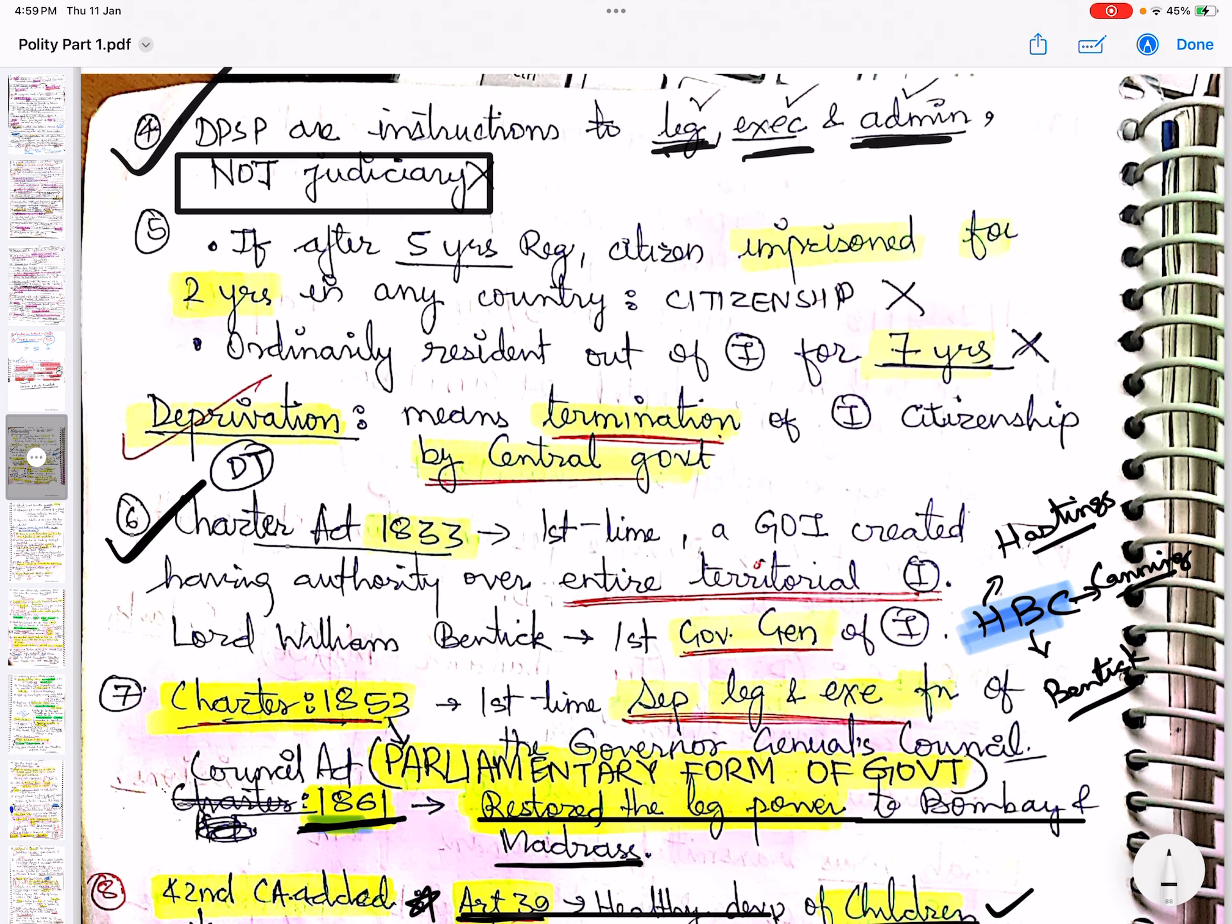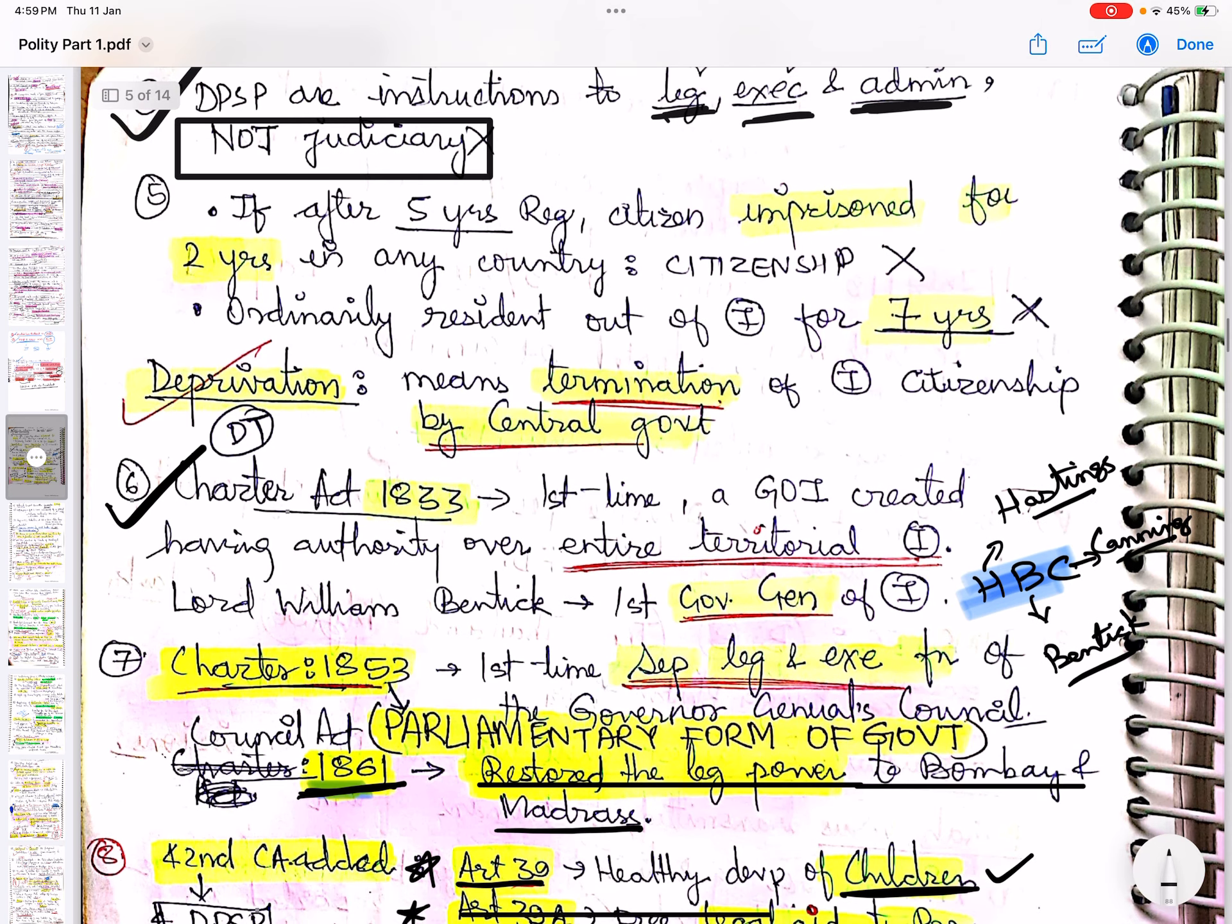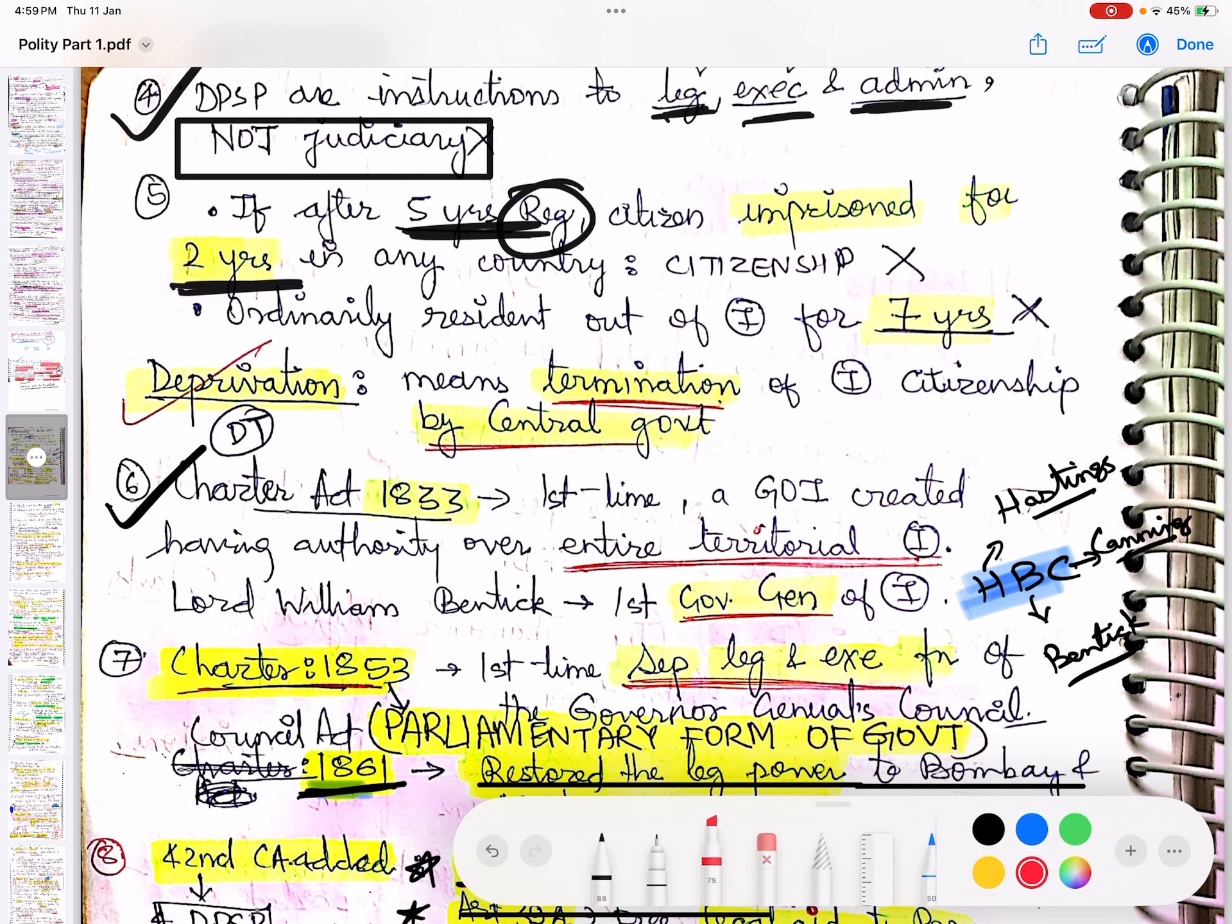If after 5 years of being registered as a citizen, if you are imprisoned for 2 years in any country, then the citizenship is gone. Similarly, if you are ordinarily resident out of India for 7 years, then the citizenship is gone.